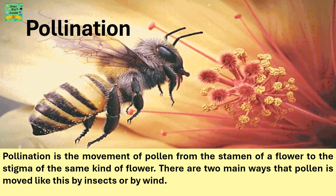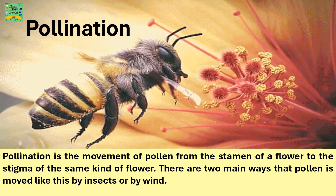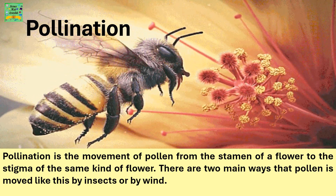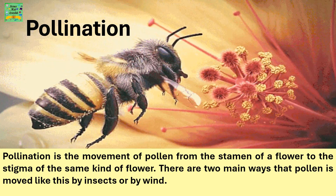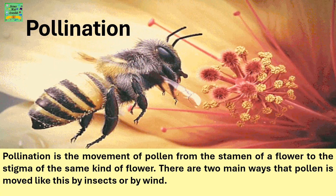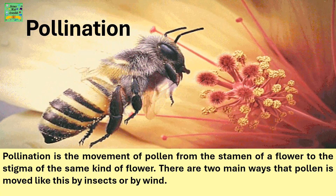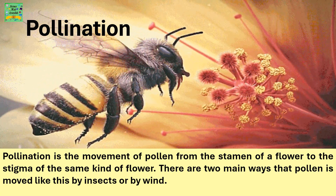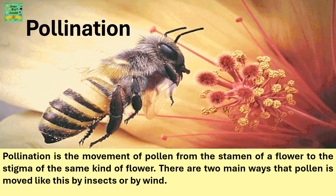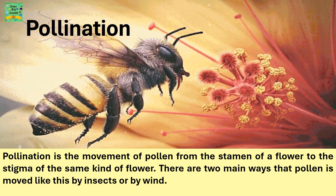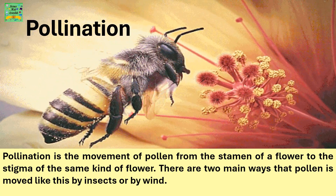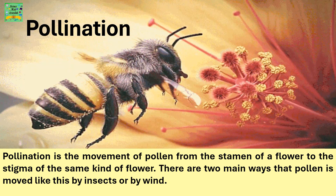Pollination is the movement of pollen grains from the stamen of a flower — that is the male part — to the stigma of the same kind of flower. There are two main ways that pollen is moved like this: by insects or by wind.